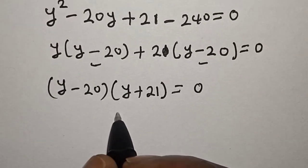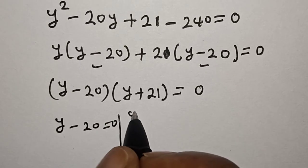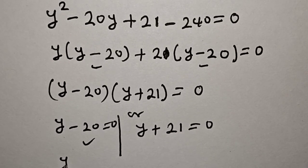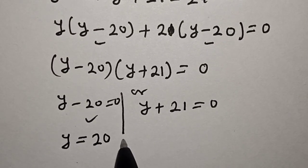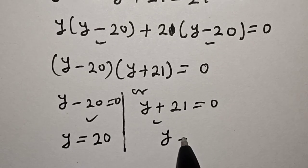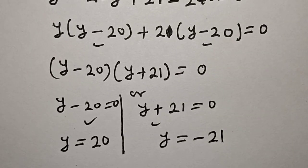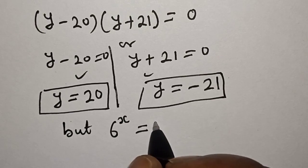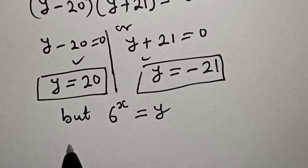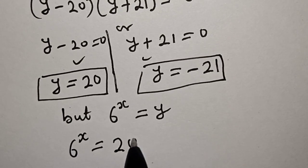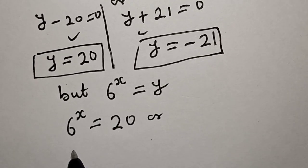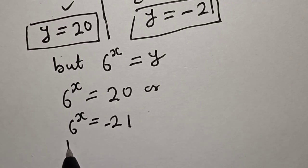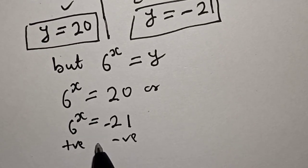There are two cases: y minus 20 equals 0, giving y equals 20, or y plus 21 equals 0, giving y equals minus 21. Since 6 raised to power s equals y, we have 6 raised to power s equals 20 or 6 raised to power s equals minus 21. Since the exponential is always positive, the negative value is rejected.